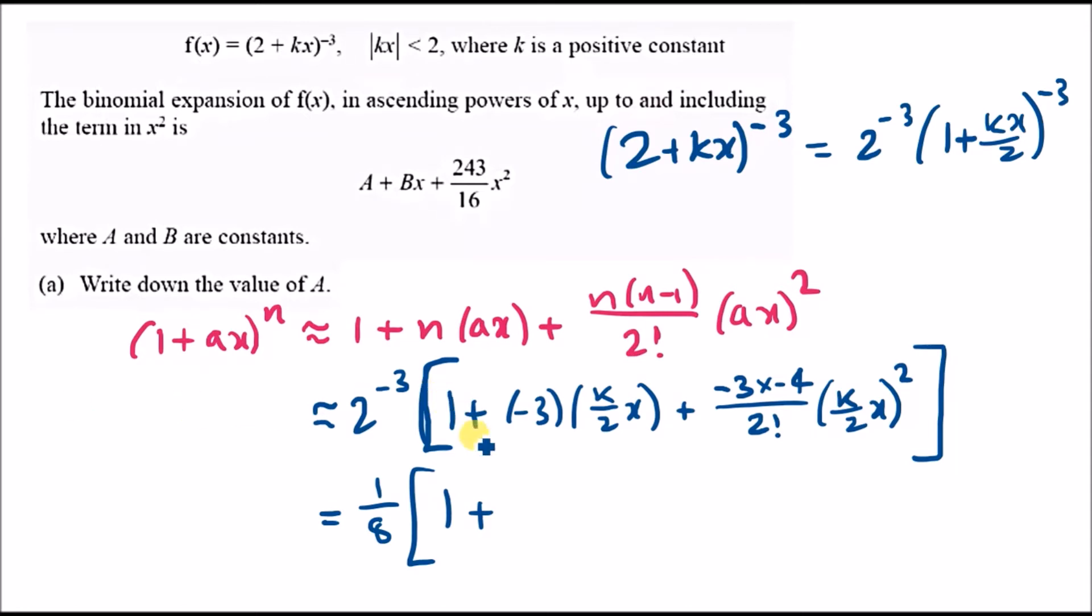Expanding inside, you've got (-3) times (k/2)x, which is -3k/2 x. Then (-3) times (-4) is 12, divided by 2 is 6, then 6 times (1/2)^2 gives 3/2 k^2 x^2. If you expand this, you can clearly see that the first term A is 1/8 times 1, which is 1/8.